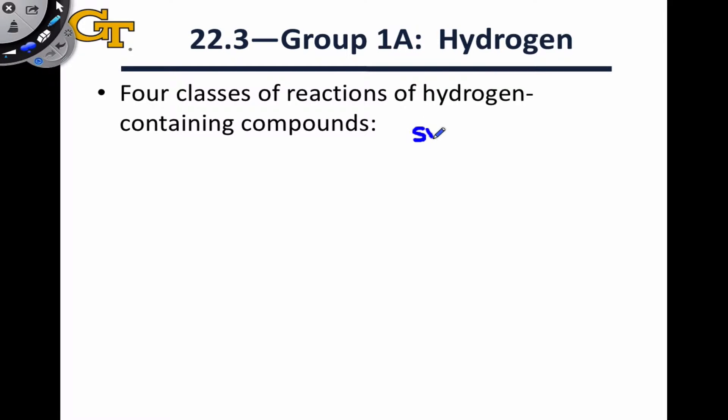In the last video, we looked at three different strategies for synthesizing hydrogen-containing compounds. Two of the three strategies relied on starting materials that were not elemental hydrogen, specifically proton transfer to a Bronsted base and metathesis reactions involving a hydride transfer.